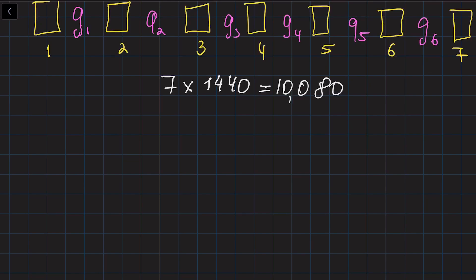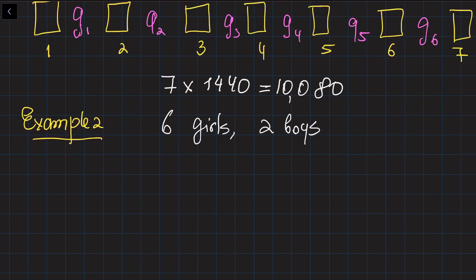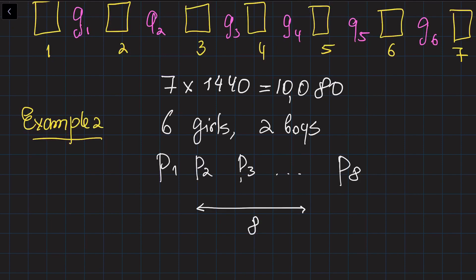Now let's make this a second problem. Say you have six girls and two boys — how many different rearrangements are possible with no constraints? In this case you don't need to know the gender; just treat them as eight distinct persons. The number of rearrangements of eight different objects is eight factorial, which equals 40,320.